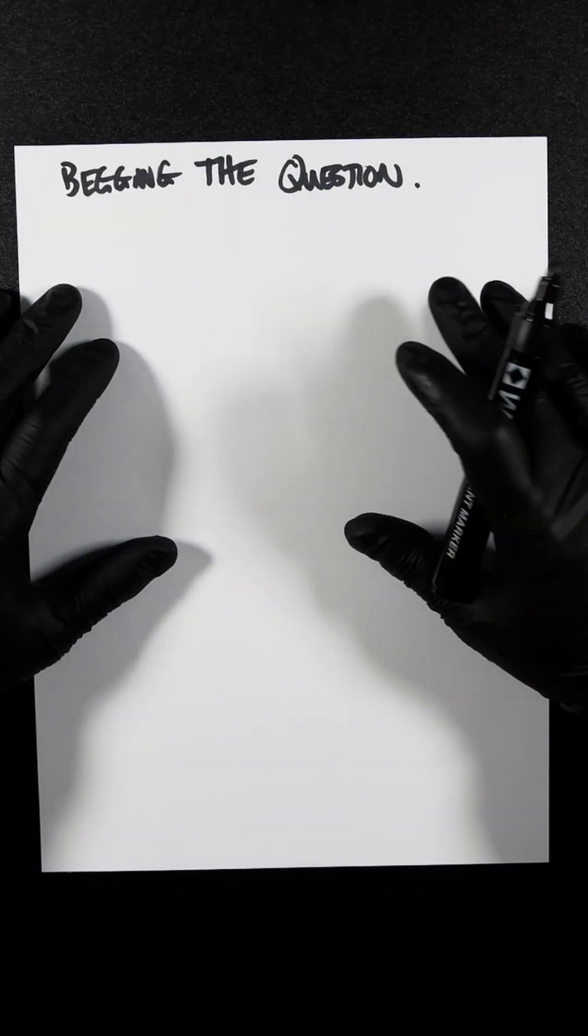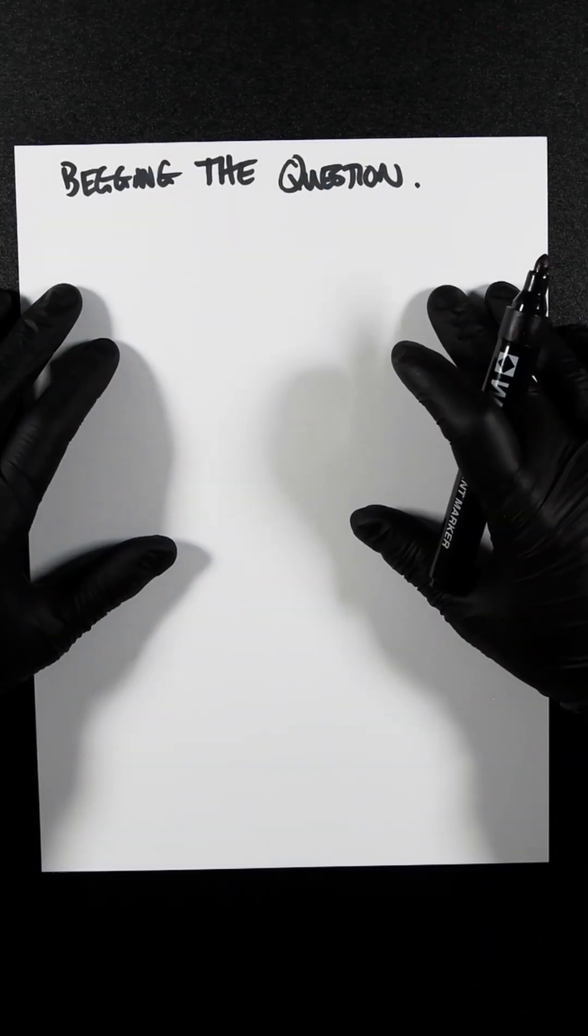Begging the question is a logical fallacy where an argument's conclusion is assumed in its premise, often in a disguised or circular way.